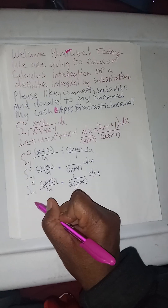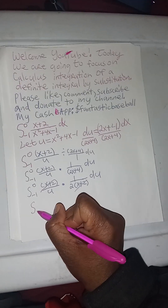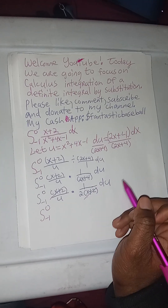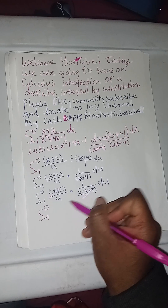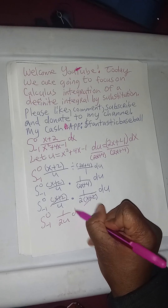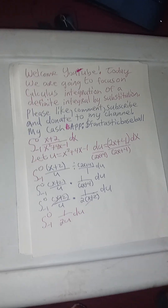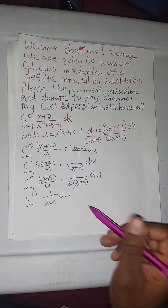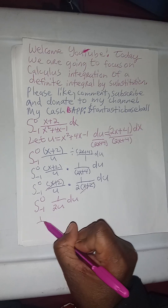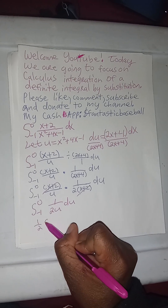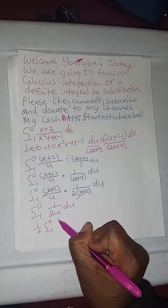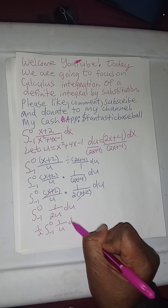So now this problem is going to read from negative 1 to 0 of 1 divided by 2u, du. We can factor out one half in front of the integral, so it's going to be one half times the integral from negative 1 to 0 of 1 over u, du.